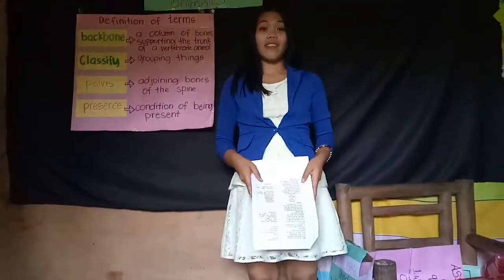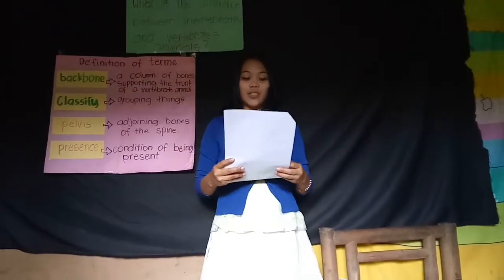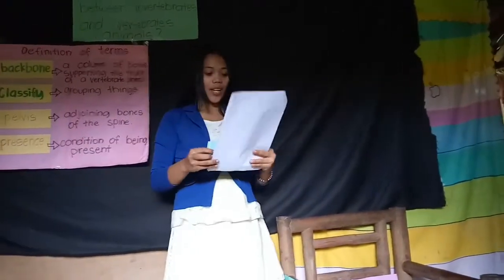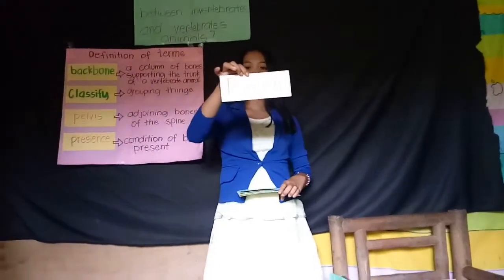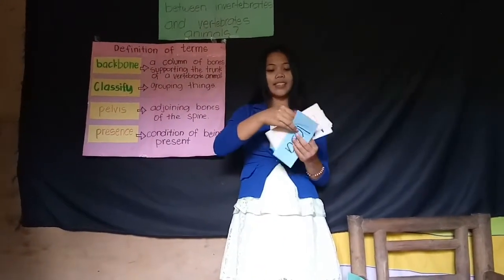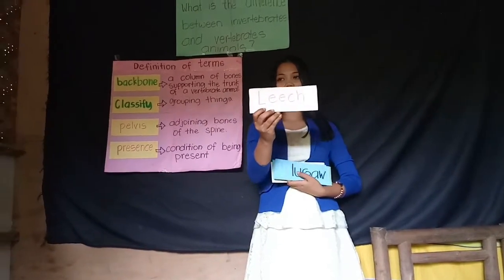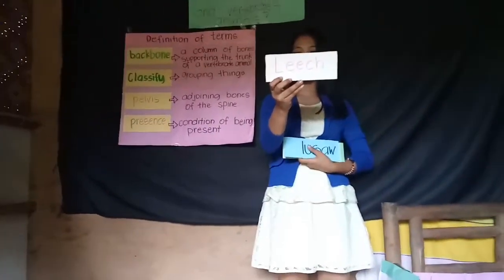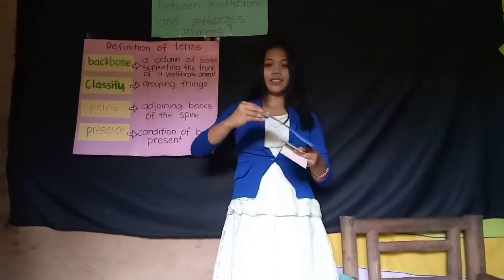I have here flashcards with the names of different kinds of animals. Raise your hand if you want to answer. Number one — read the word. Tapeworm. What is the characteristic of the tapeworm and where does it belong? In invertebrates, ma'am. Very good. Next is leech. What is the classification of the leech? Invertebrates. Very good.